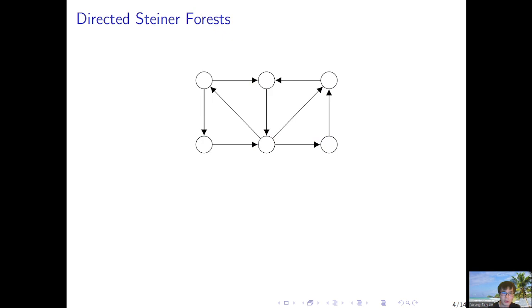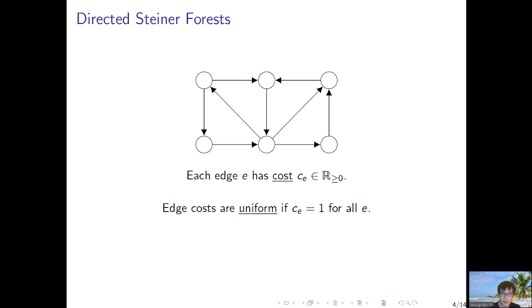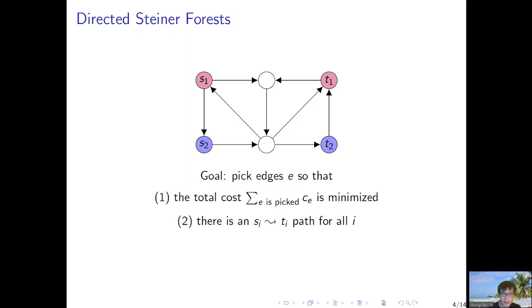Let's move on to the other problem: the directed Steiner forest problem. On the input, we are given a directed graph where each edge is associated with a cost that is non-negative. We say the costs are uniform if they are all ones. We also have terminal pairs S_i, T_i. Our goal is to pick edges so that first, the total cost is minimized, and second, there is an S_i to T_i path for all i. This problem differs from the spanner problem in that the objective is to minimize cost and we care about reachability instead of distance constraints. Here is an example where there is an S1 to T1 path and an S2 to T2 path.